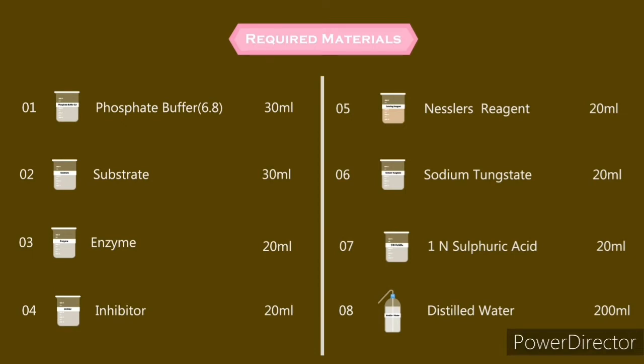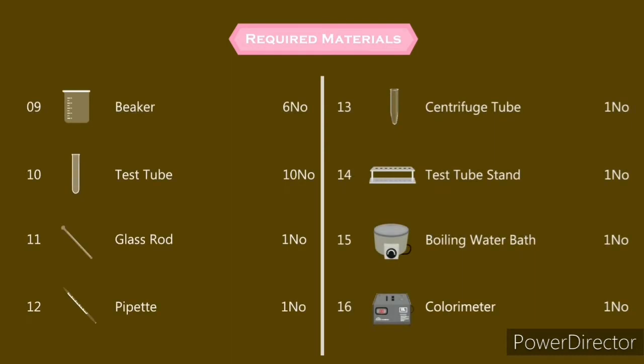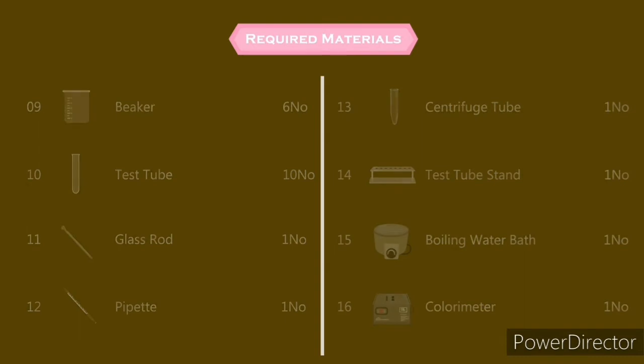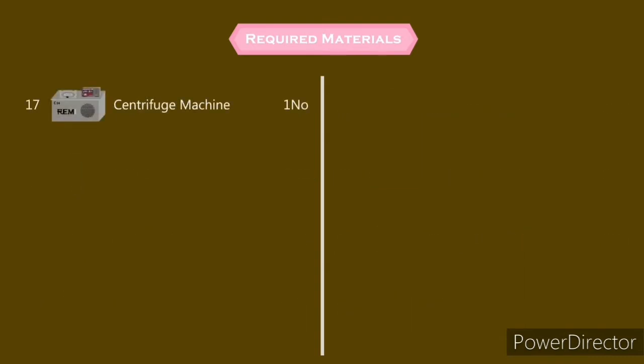The required materials are phosphate buffer, substrate, enzyme inhibitor, Nessler's reagent, sodium tungstate, sulfuric acid, distilled water, beaker, test tube, glass rod, pipette, centrifuge tube, test tube stand, boiling water bath, spectrophotometer, and centrifuge machine.